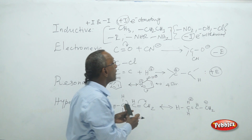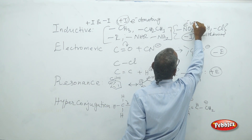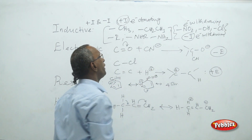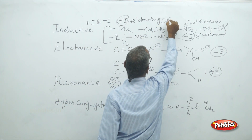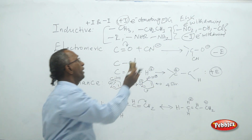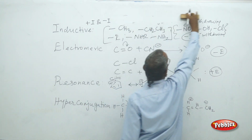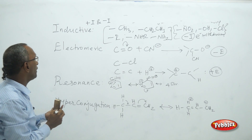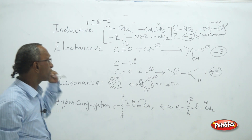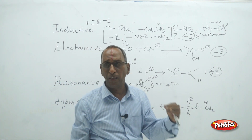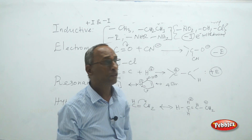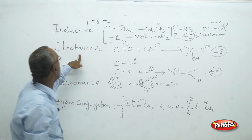Halogens are more electronegative — we are aware of that. The nitro group, hydroxyl group, carboxyl group, and halogen group are all electron-withdrawing groups, called minus-I effect groups. In textbooks, you will see the captions EDG — electron donating groups — and EWG — electron withdrawing groups. The inductive effect arises due to the electron-donating or electron-withdrawing capacity from adjacent carbon atoms by the groups.